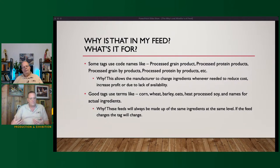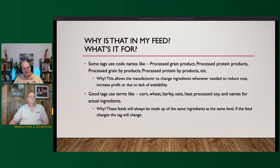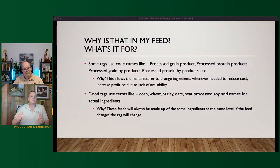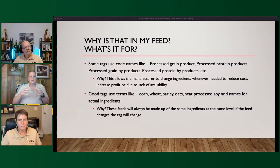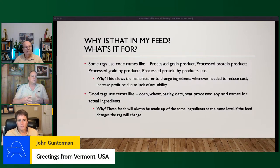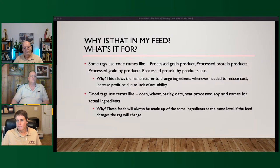When I see things on the feed tag like 'processed grain products' or 'grain byproducts' or 'protein byproducts,' I kind of view that as a red flag — maybe not as good a quality of feed. You don't know for sure; it's a code name, top-secret insiders-only. Whether it's Nutrena, Cargill, Purina — doesn't matter — they all play the same game, and as the commodity market changes, so do those ingredients.